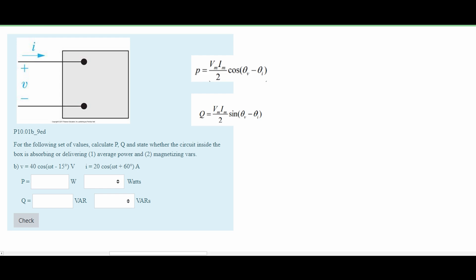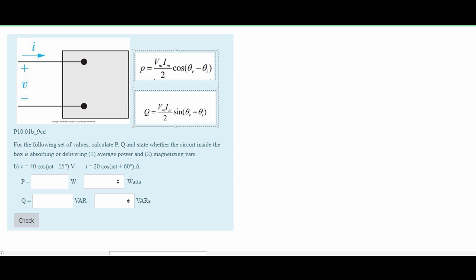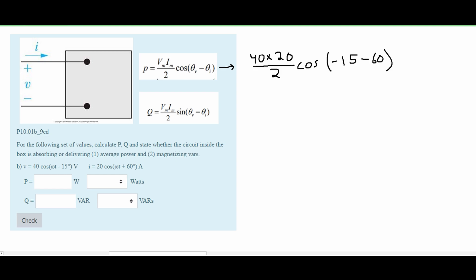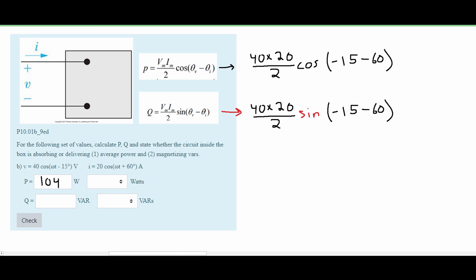Moving on to Problem 2, we're going to do the same thing and plug the values into the formulas. Both of these are cosine, so we don't have to convert anything. We can plug them into our calculator — again make sure it's in degrees. We get that our power is approximately 104 watts; since it's positive, we know it's absorbing. For Q, we get approximately negative 386 VARs, which is being delivered because it is negative.